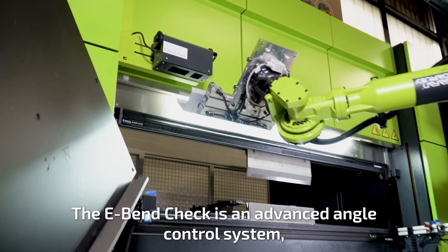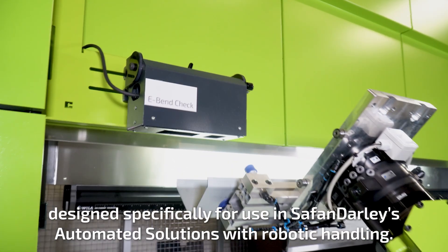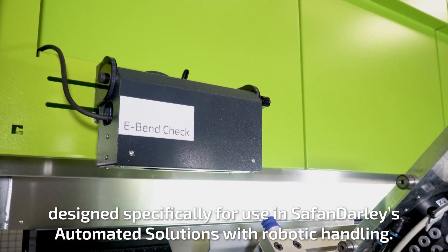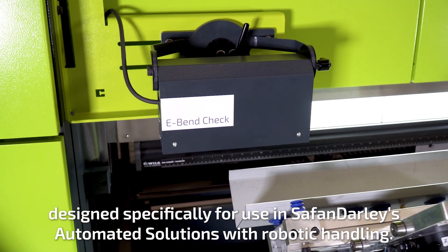The eBendCheck is an advanced angle control system designed specifically for use in Safan Darley's automated solutions with robotic handling.